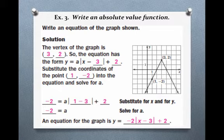The vertex of the graph is (3, 2), so that means H is 3 and K is 2. We substitute those values into our equation and get Y equals A times the absolute value of X minus 3 plus 2. We now have values for two of our parameters, H and K. Our third parameter, A, we still need to find.